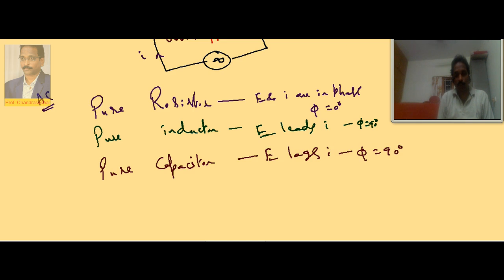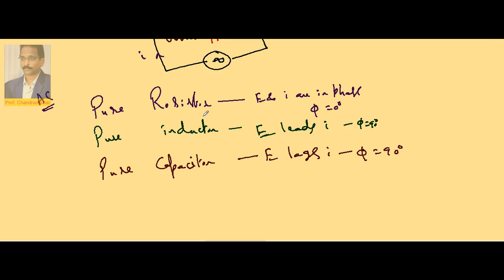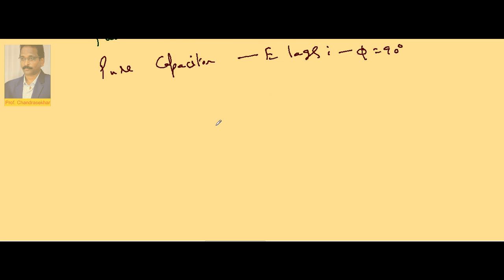For a pure capacitor, E lags current with a phase difference of 90 degrees. So: in a pure resistor, E and I are in phase; in a pure inductor, E leads I; and in a pure capacitor, E lags I. Now for the series LCR circuit, let us draw a phasor diagram.